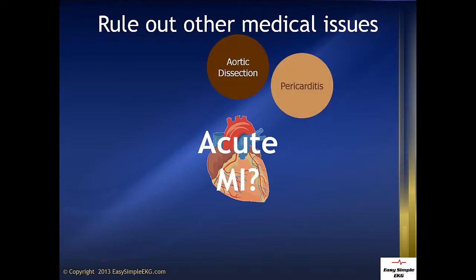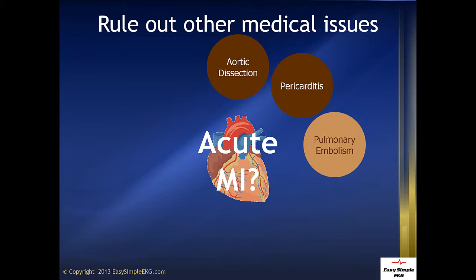Pericarditis can fool even the best cardiologist into thinking the patient is having an MI. Pulmonary embolism is usually described as a sharp pain associated with respiration.